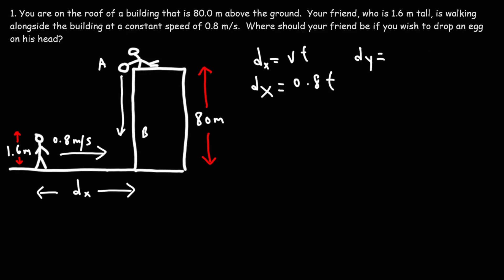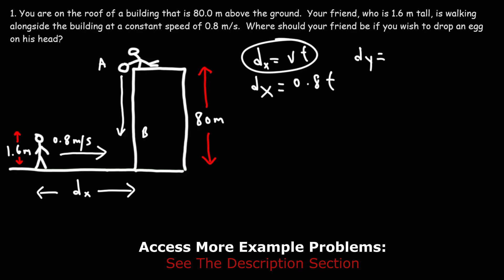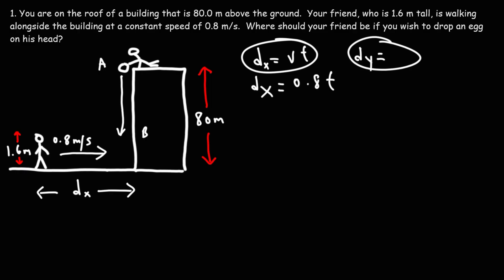Now, because the egg will be falling under the influence of gravity, we have motion with constant acceleration. So the displacement formula will be different. This displacement formula deals with motion with constant speed. Now we're dealing with constant acceleration.